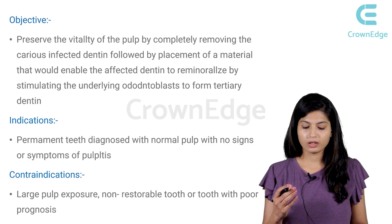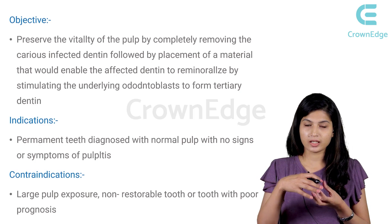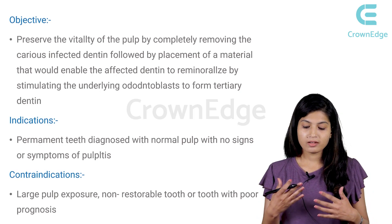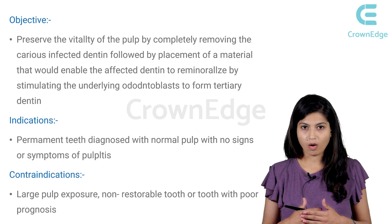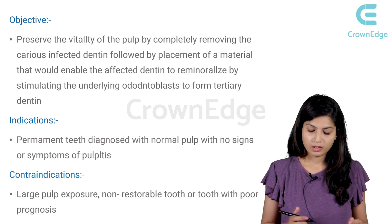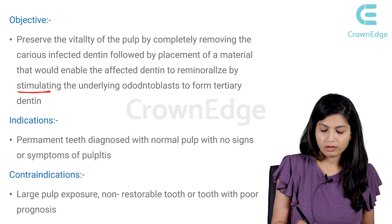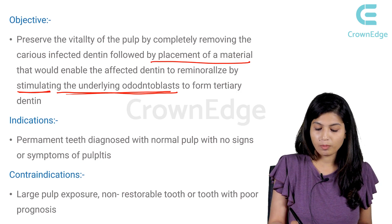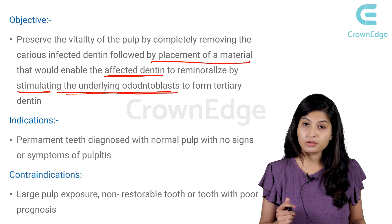We have to leave the affected dentin and place a dressing on top of it. This dressing stimulates the underlying odontoblast cells, which will ultimately form tertiary dentin — another layer of dentin is formed and the vitality of the pulp is preserved. The stimulation of the underlying odontoblasts by placement of the material on top of the affected dentin is the basic mechanism of indirect pulp capping.